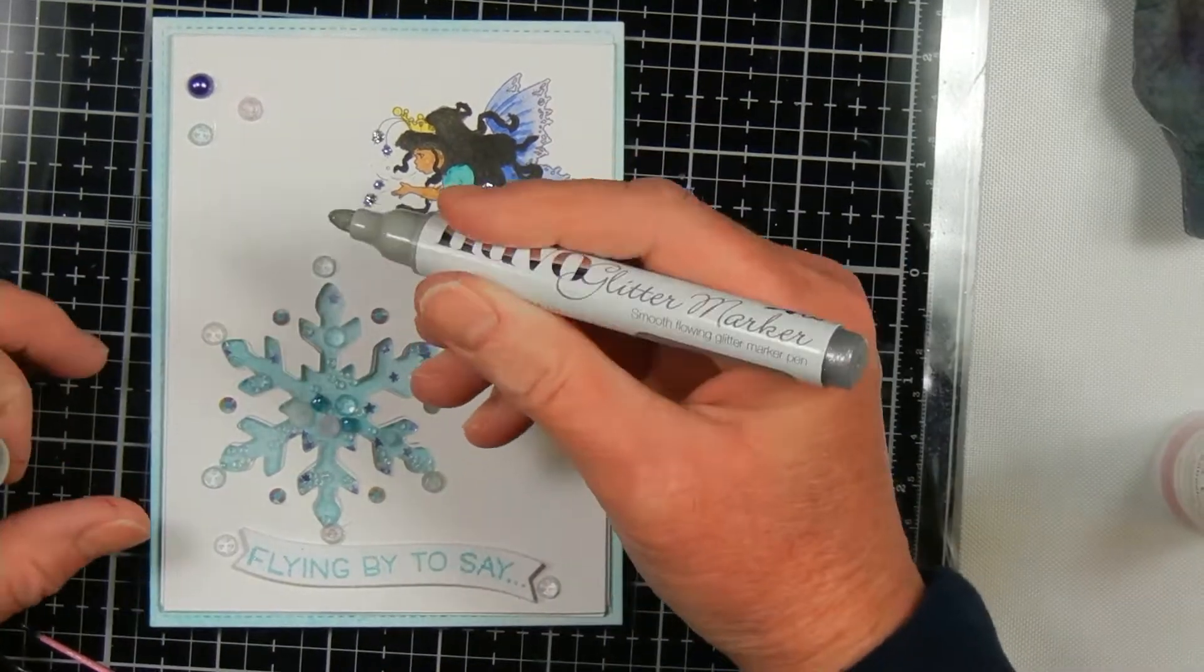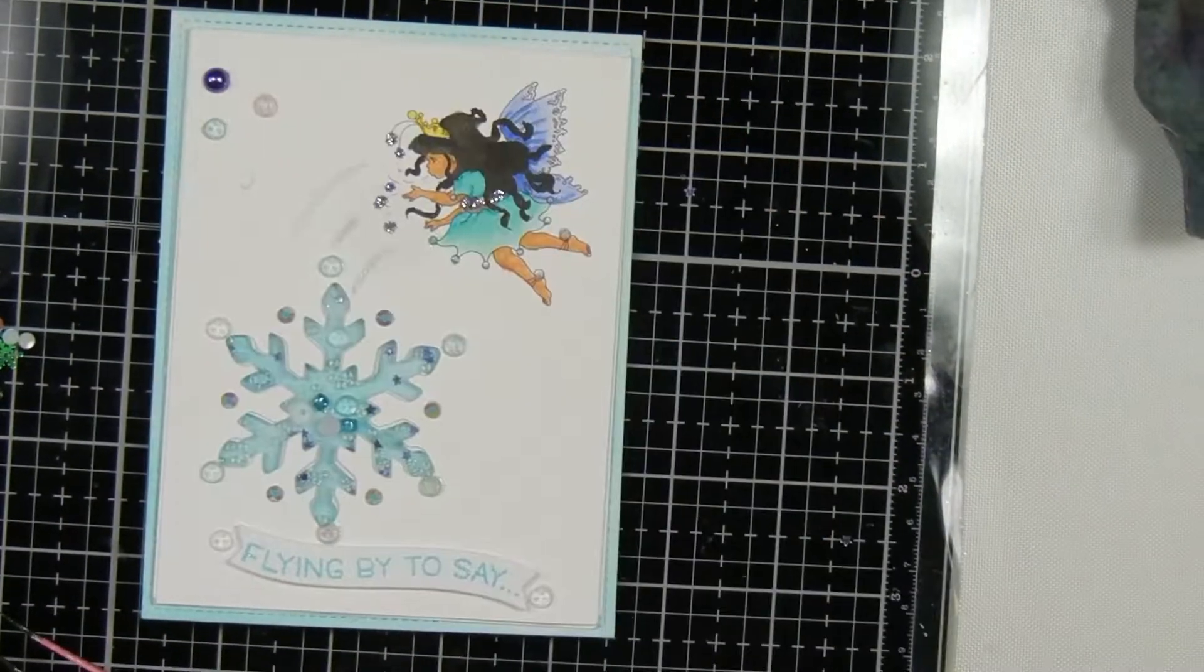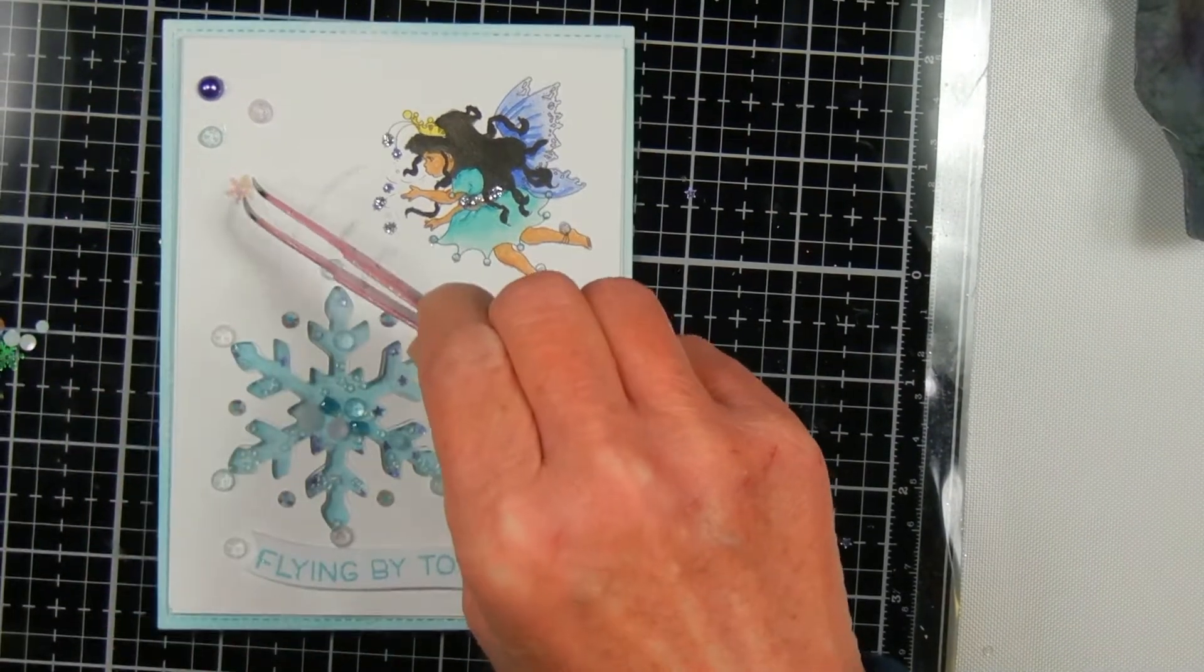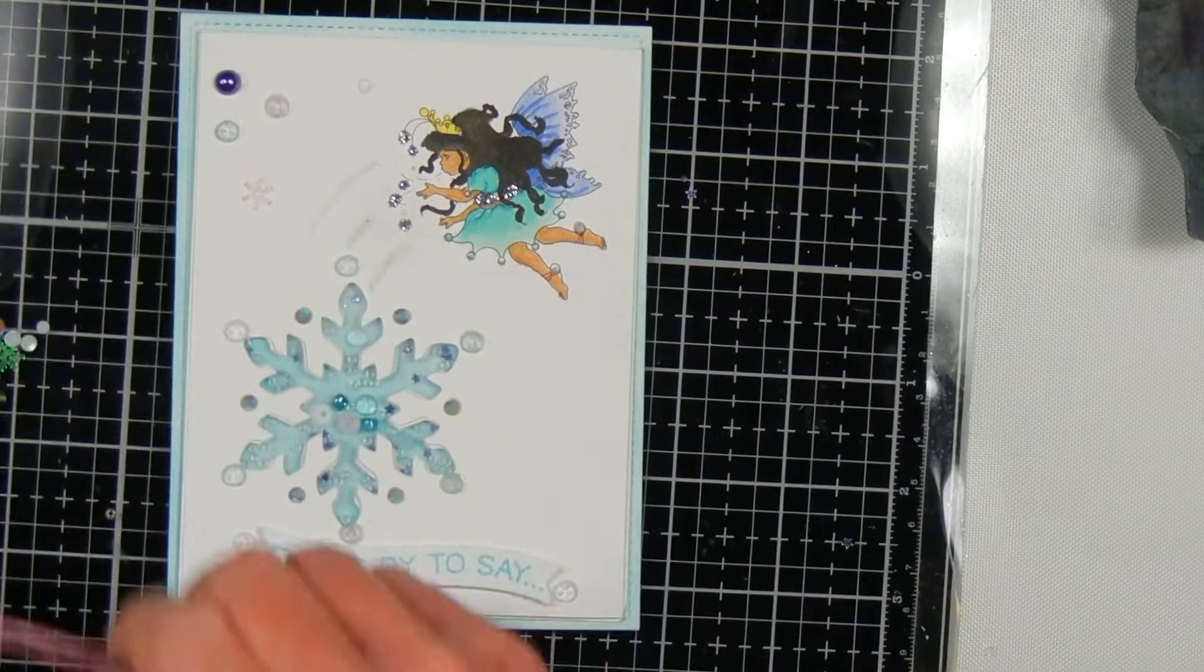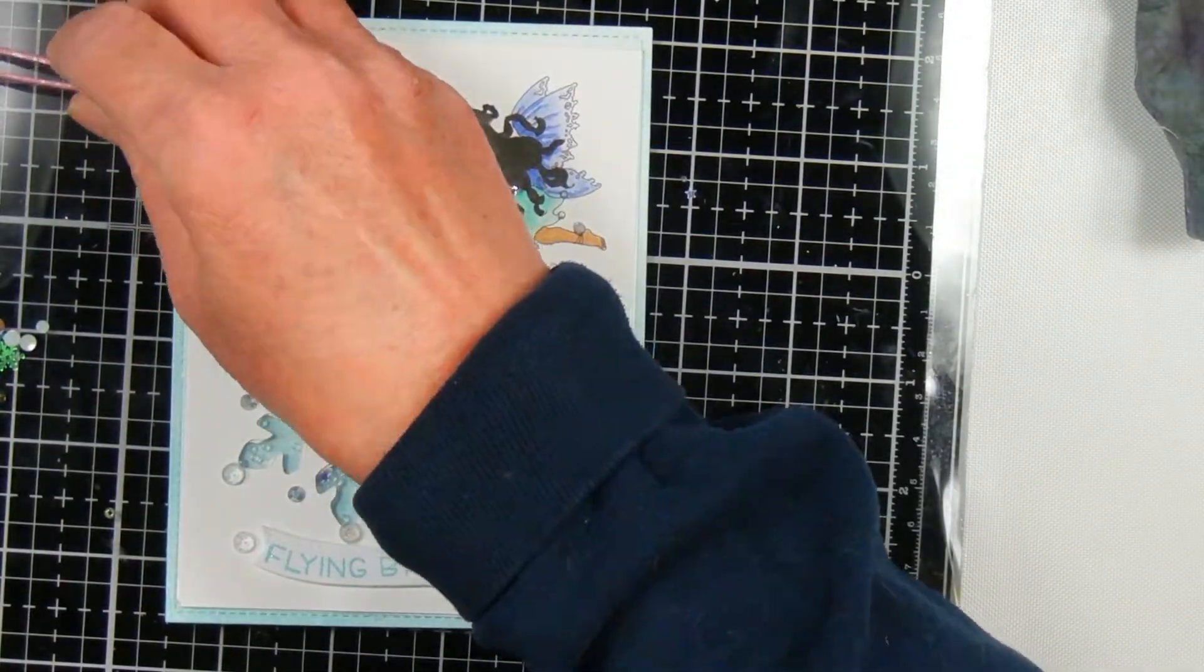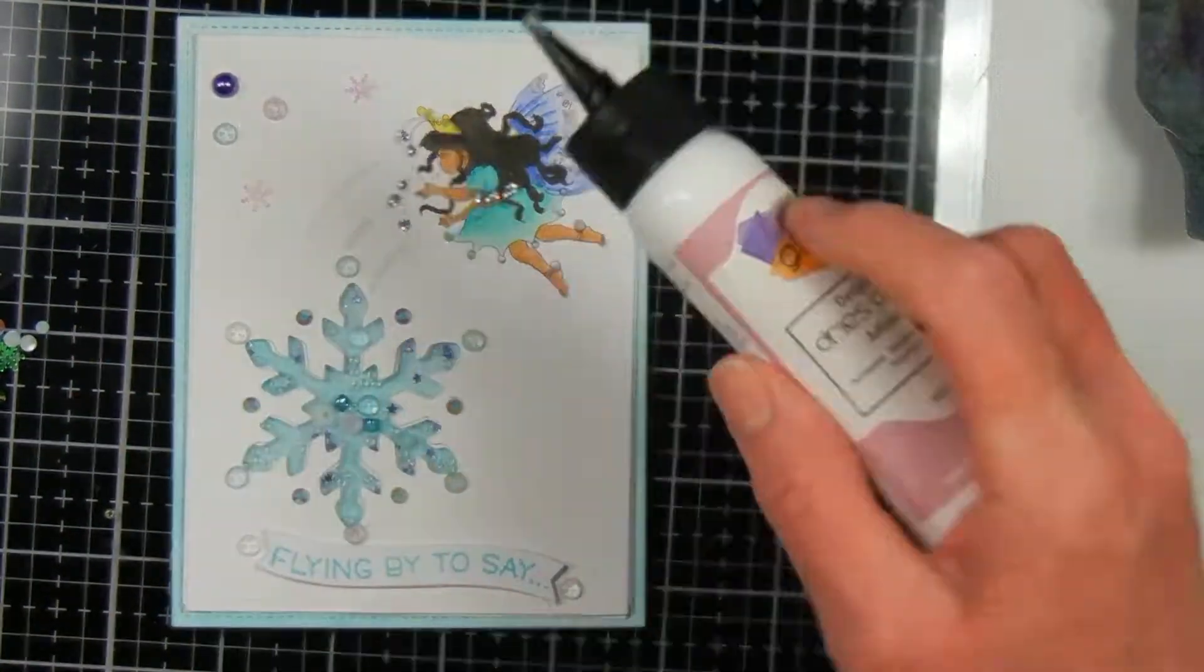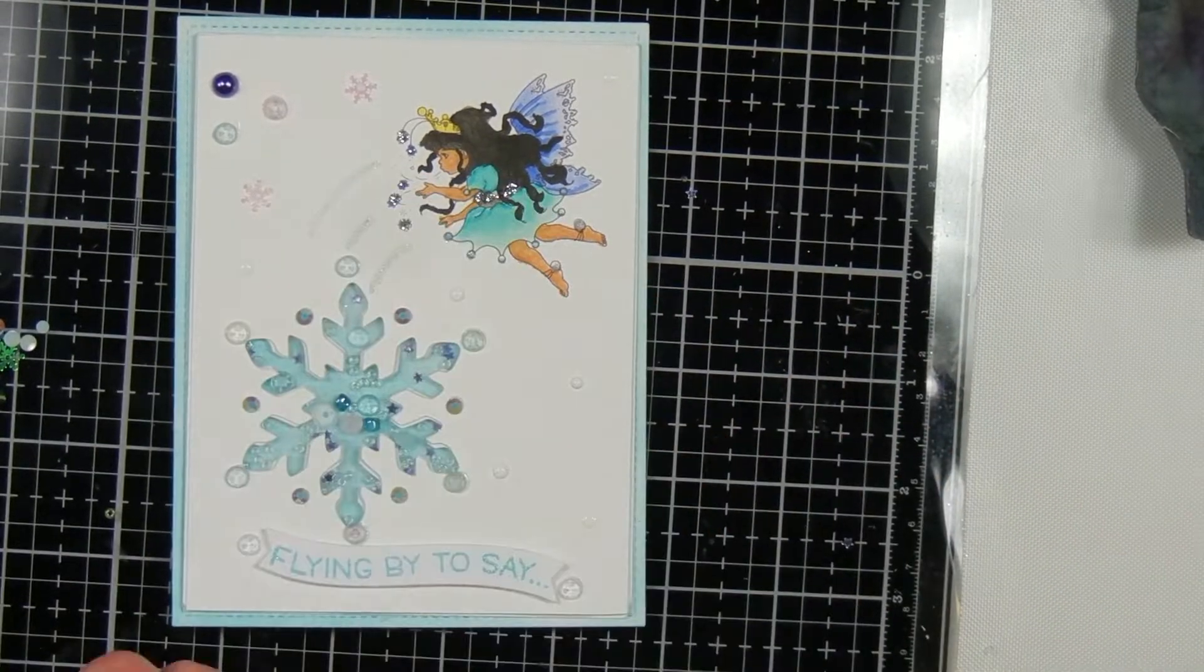I decided the card needed a little bit more on the front so I used this glitter marker in silver from Nuvo. Then I used my art glitter glue to attach some snowflakes from another sparklets mix. It looks iridescent but when I put it on the card it turned out a little bit more pink and kind of peach color.